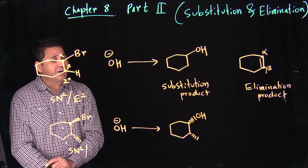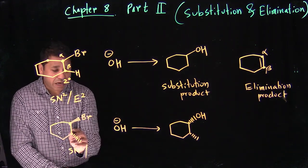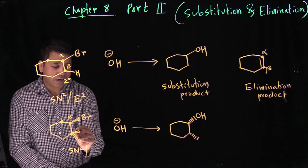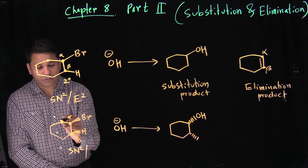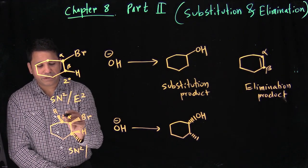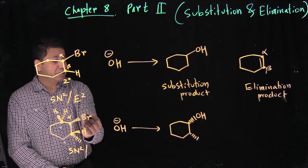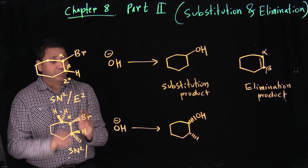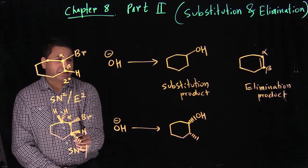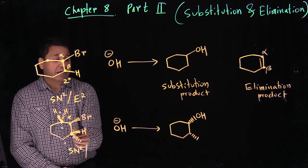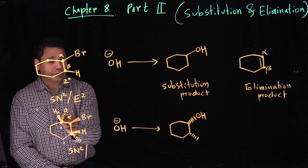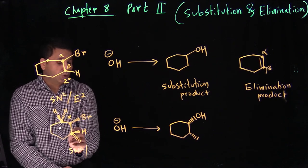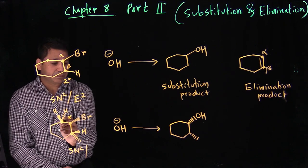That's the substitution product. For elimination, we identify the alpha carbon with the leaving group and check how many beta carbons we have. We have beta one and beta two. Beta one has a hydrogen and beta two has two hydrogens as well. However, the hydrogen on beta two is not suitable for elimination because in E2 the leaving group and the hydrogen must be anti — one up, one down. In this case they're on the same side, so that beta is not eligible for elimination.